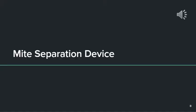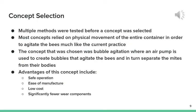We will now go into detail about the mite separation device. Our team tested multiple methods before we selected a concept. Most concepts relied on physical movement of the entire container to agitate the bees, much like the current practice. However, the concept that was chosen was bubble agitation, where an air pump is used to create bubbles that agitate the bees and separate the mites from their bodies. The advantages of this concept included that it was safer to operate, much easier to manufacture, cost less, and had significantly fewer wear components.